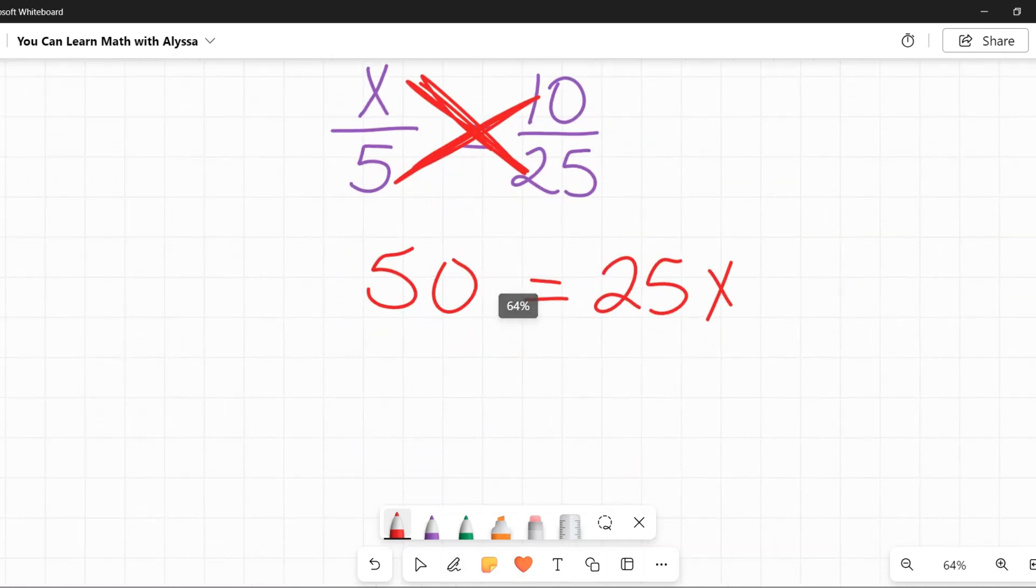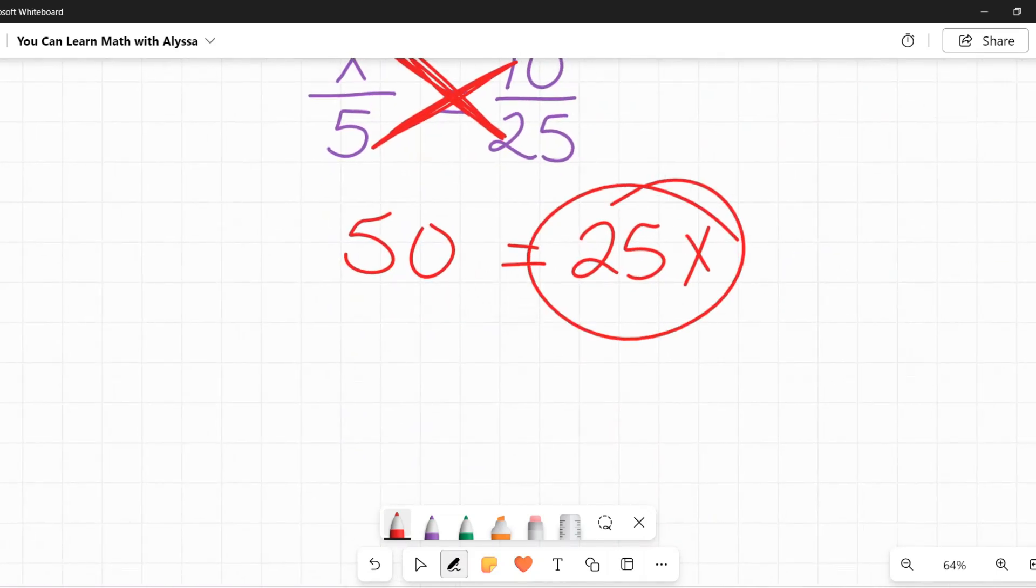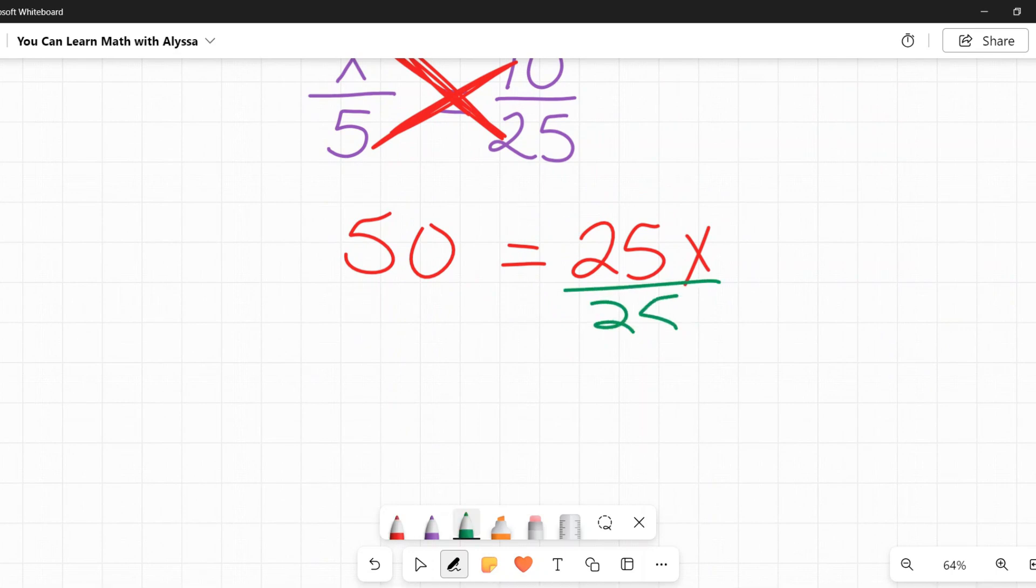So to solve for x here, since 25 is being multiplied by x, I need to divide this by 25 to get rid of it. On the left side, I have 50 divided by 25, which is 2, and on the right side, those 25s cancel out, and I am just left with x.